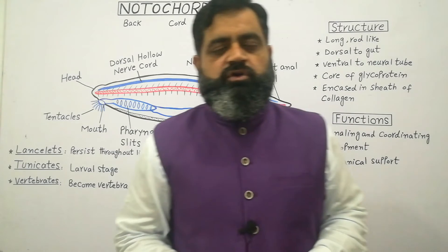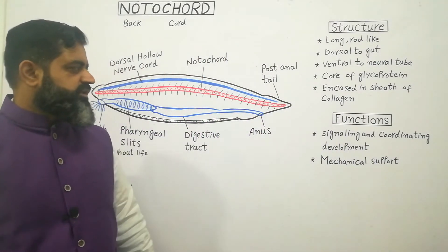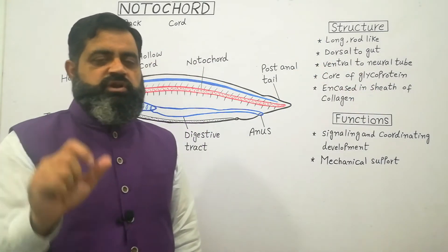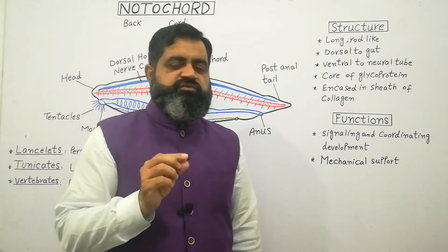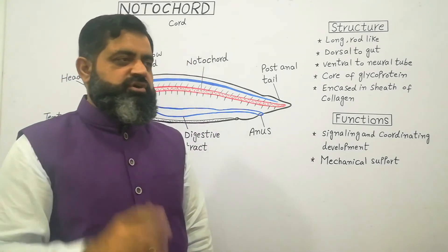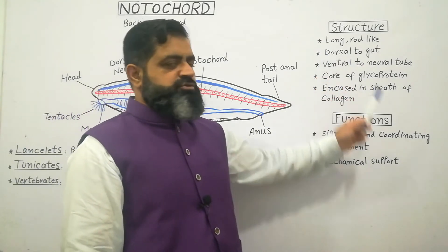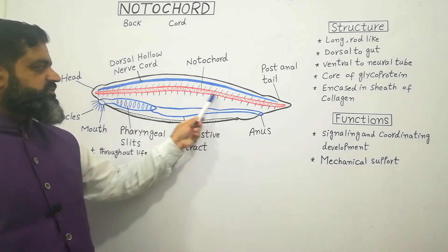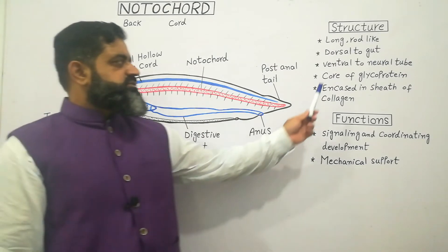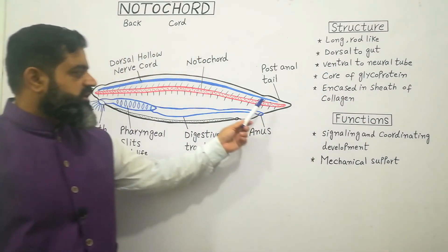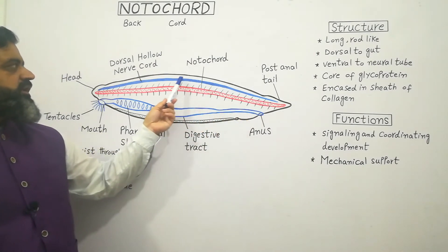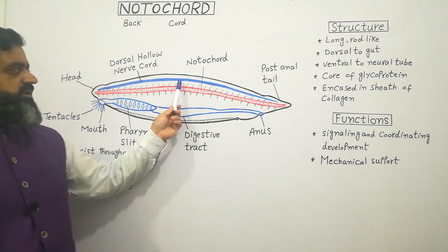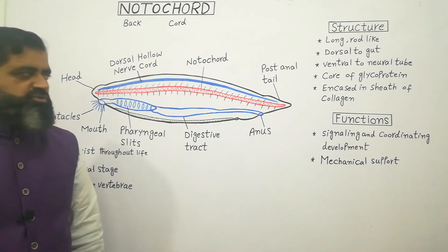If we look at the structure of the notochord, first of all it is a long rod-like, semi-rigid structure composed of something similar to cartilage — primitive cartilage. This structure is present dorsal to the gut: as you see in blue, this is the digestive tract, and the notochord is on the dorsal side of it. It is also present ventral to the neural tube — there is a dorsal hollow nervous system on the dorsal side, and on the ventral side of that nervous system is the rod-like notochord.